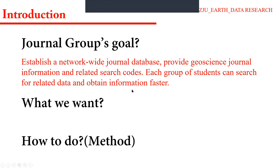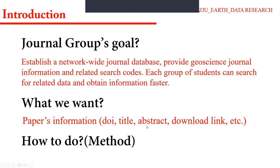What should the database have? We want papers' information — for example, the DOI, the title, the abstract, or the download link, etc. The question is how to do this job. That is today's topic: the web crawler. The information is all on the web, so I prepared several points today to give a brief talk about the web, assuming no background knowledge about internet crawlers.